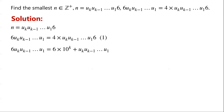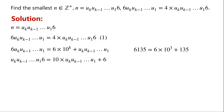The number 6, u_k, u_{k-1}, ..., u_1 can be written as 6 × 10^k + (u_k, u_{k-1}, ..., u_1). For example, 6,135 can be written as 6 × 10^3 + 135, since 6,135 is a 4-digit number, so k equals 3. The original number u_k, u_{k-1}, ..., u_1, 6 can be written as 10 × (u_k, u_{k-1}, ..., u_1) + 6. For example, 1356 can be written as 10 × 135 + 6.